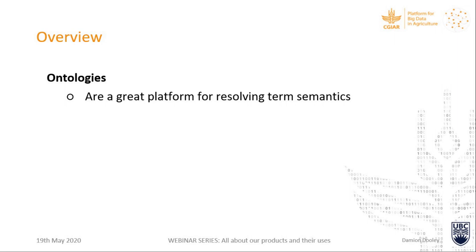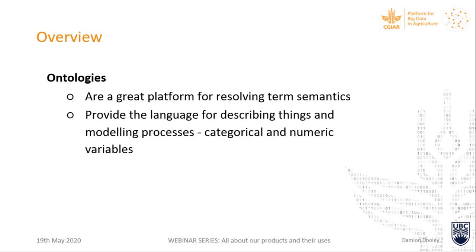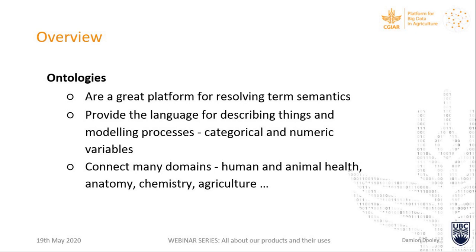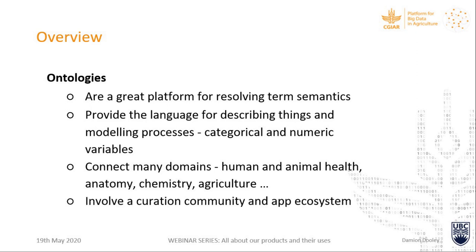As we talk about FoodOn, I'd like to argue that ontologies are a great platform for resolving term semantics. They provide a language for describing things and modeling processes, categorical and numeric variables — that's the low-hanging fruit that scientists can take advantage of. They connect many domains together in informatics: human and animal health, anatomy, chemistry, and agriculture.